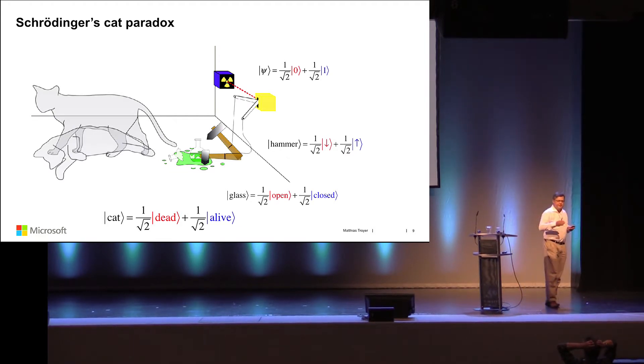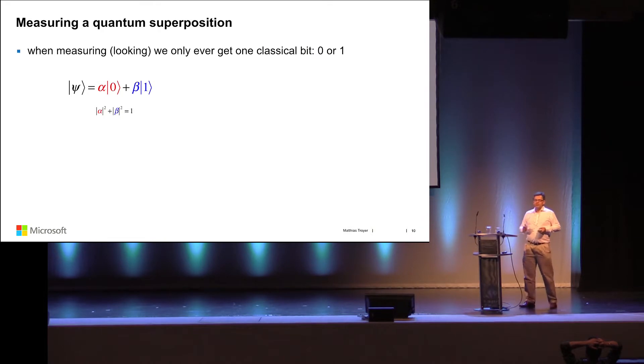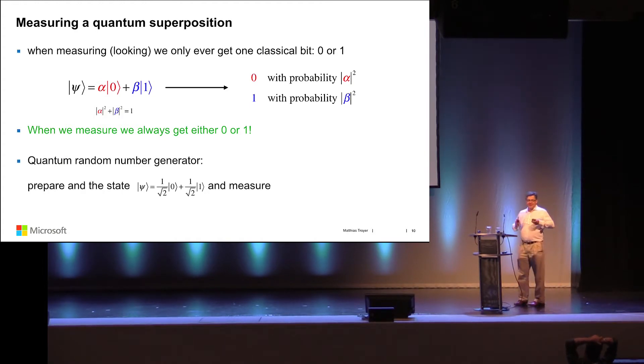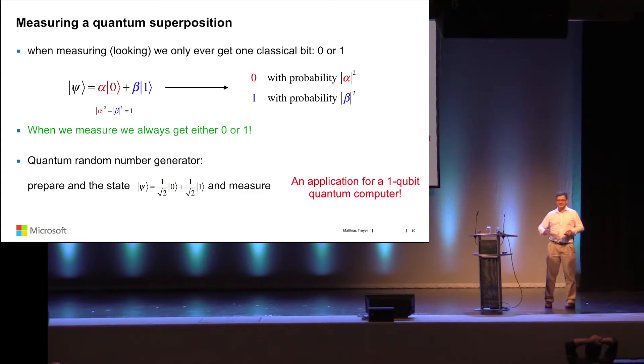You have not seen a Schrödinger cat yet. What we want to do is build a Schrödinger cat type supercomputer. When we look at the photon, it was either in the left or right detector. When I look at the cat, it is either dead or alive. So what happens is I compute, and then at some point I look at my bit. Looking at my bit, I don't get a superposition of zero or one, but I get either zero or one. What I get is random, and it depends on the amplitudes. So you always only get zero or one. The cat is always either dead or alive.